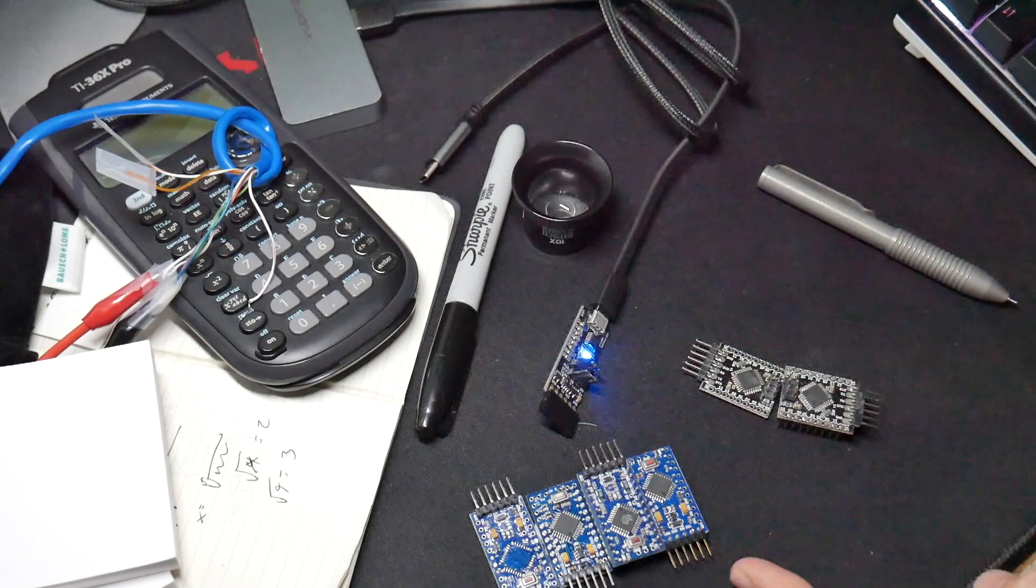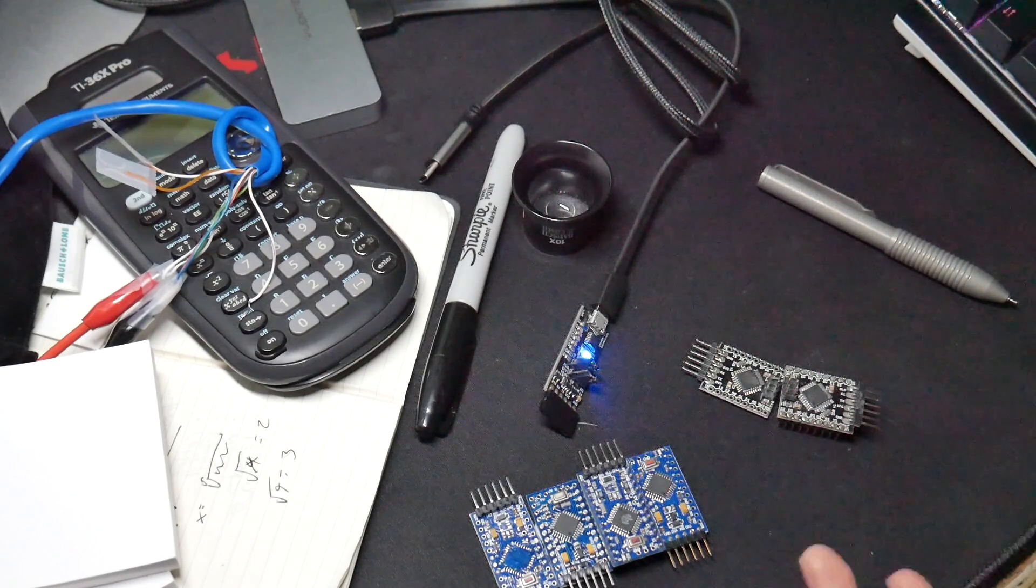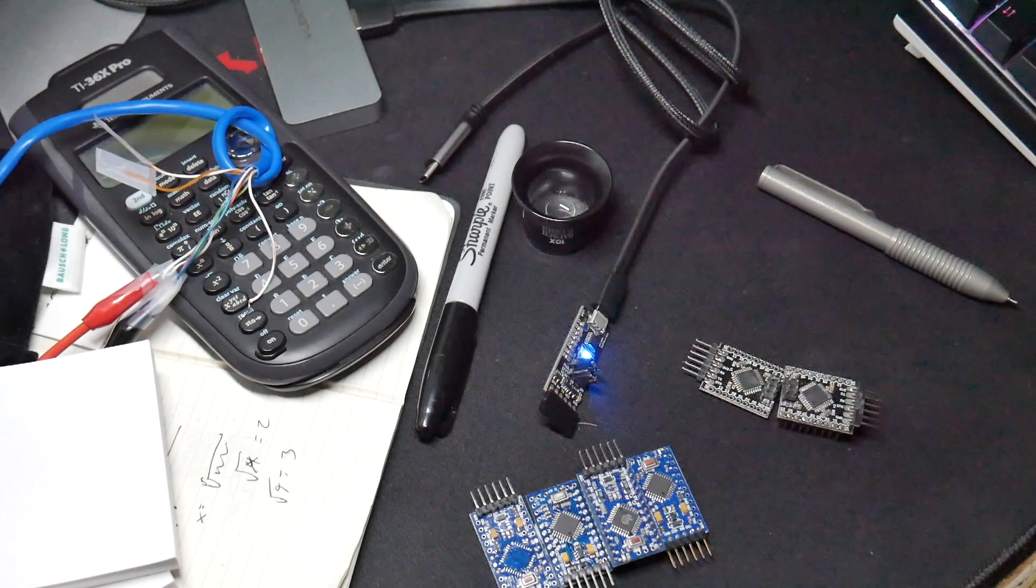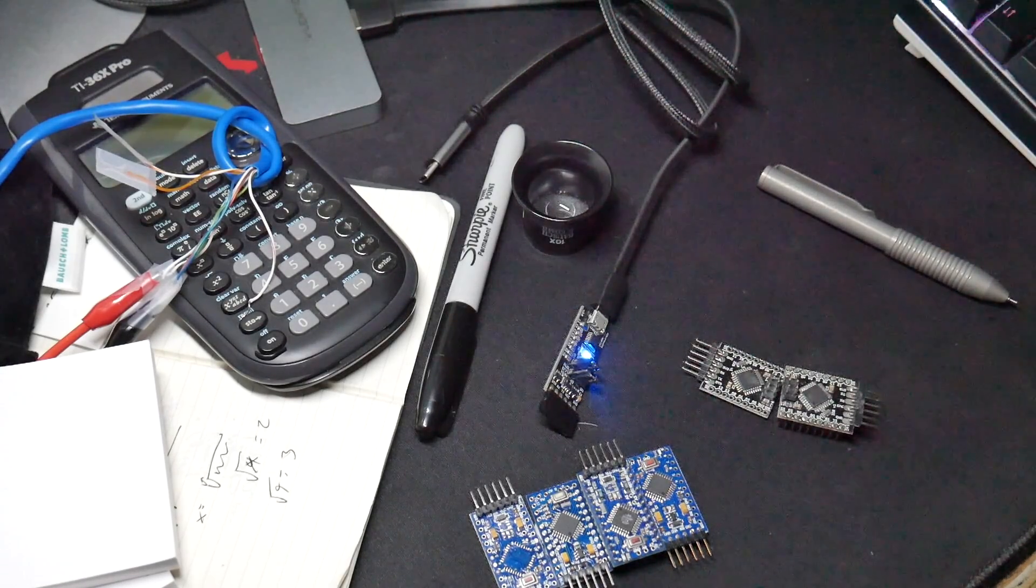And sure enough, with the counterfeit Pro Minis, or the suspiciously counterfeit Pro Minis, this does read out correctly as you see it here. So that didn't work.